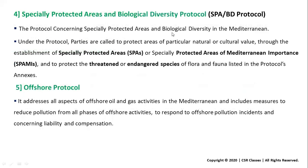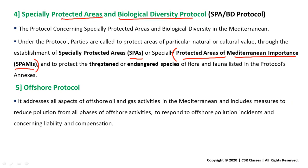The fourth protocol is the Specially Protected Areas and Biological Diversity Protocol. It deals with special protected areas in the Mediterranean region and also protects biological diversity there. Under this protocol, parties are called to protect areas of particular natural or cultural value through the establishment of Specially Protected Areas (SPAs) or Specially Protected Areas of Mediterranean Importance (SPAMIs). Remember: the term SPAMI is related to the Barcelona Convention's biodiversity protocol.